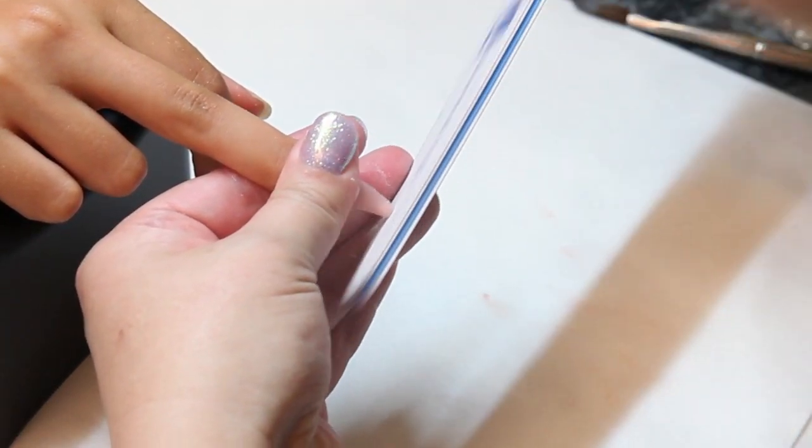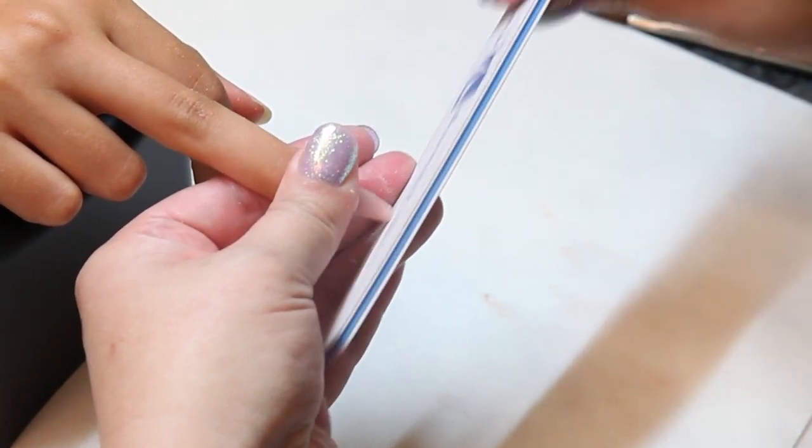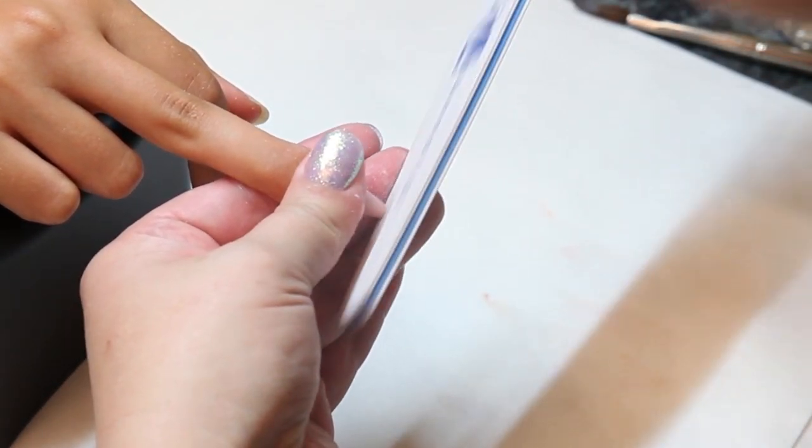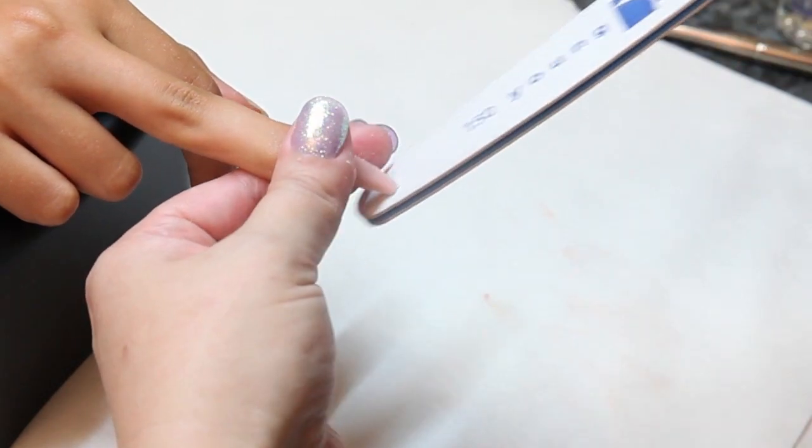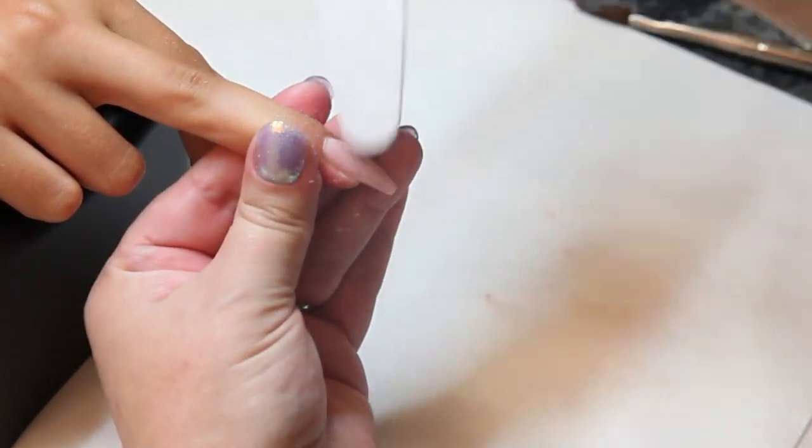And then at the end, you're just going to file straight like a square. And then you're going to do your finished filing.